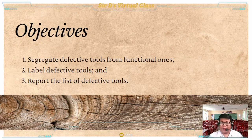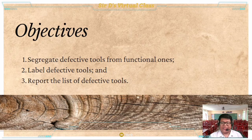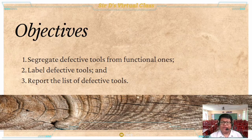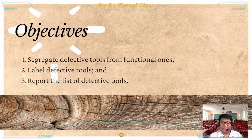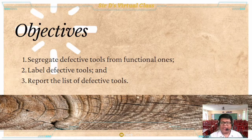Our objectives for this lesson are the following: first, segregate defective tools from functional ones; second, label defective tools; and third, report the list of defective tools.